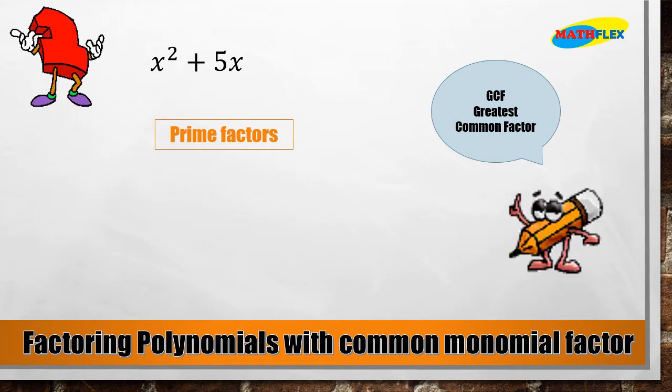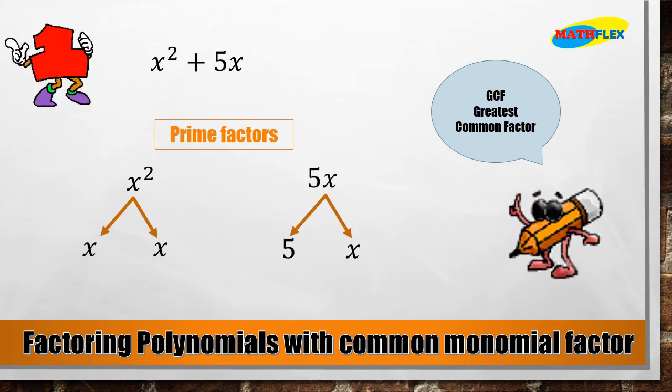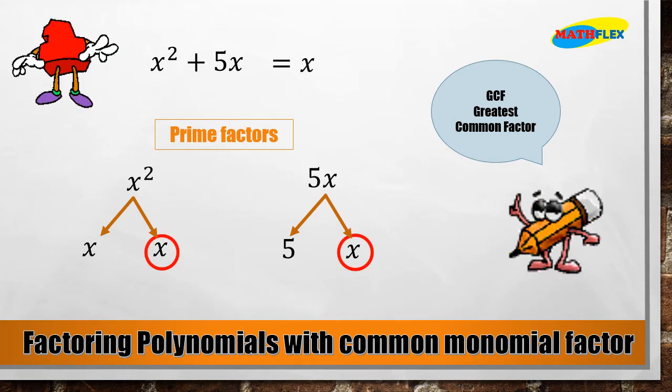Let's take a look at the prime factors of x². We have x and x. And for 5x, we have 5 and x. Now both have x's, and so we factor out x.